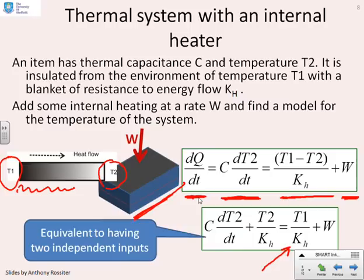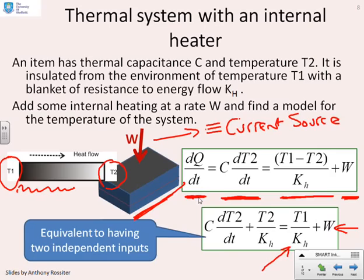If I rearrange this into a standard first-order differential equation, the key point to note is you've got two separate input signals: an input due to the external temperature and an input due to the heating. This looks a little bit different from the systems we've done before. You will probably find that this W is equivalent to a current source, so putting W straight onto that block is a bit like having a current source going straight into a capacitor.